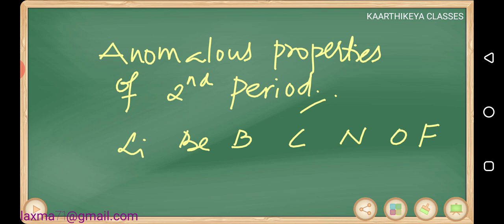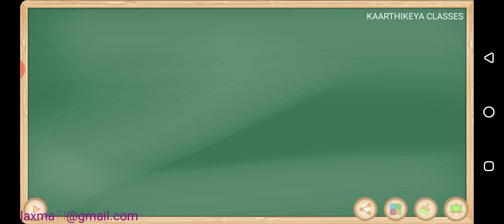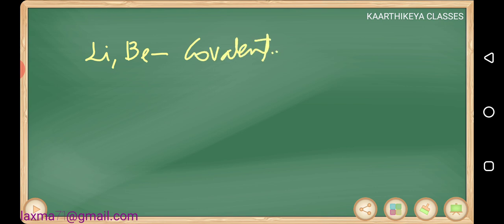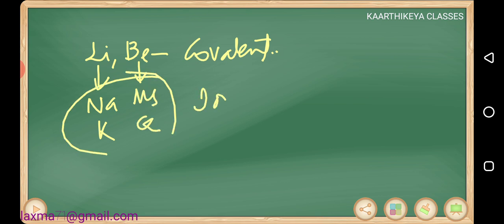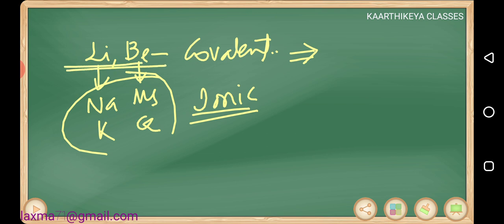Because of only s and p orbitals, they have some special characteristics. Lithium and beryllium form covalent compounds. But lithium's group members — sodium, potassium — and beryllium's group members — magnesium, calcium — are all ready to form ionic compounds. Lithium and beryllium belong to the second period, so this is the anomalous property: they have somewhat non-metallic character, whereas the remaining elements in the same groups form completely ionic compounds with most metallic nature.